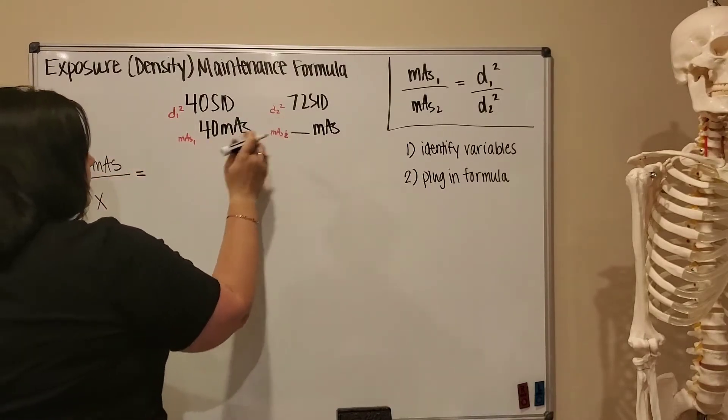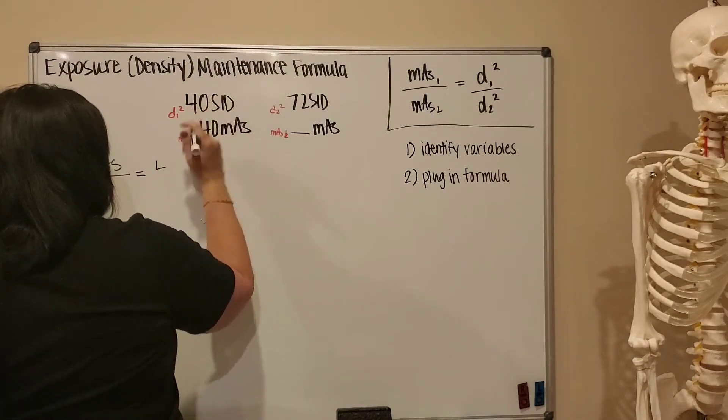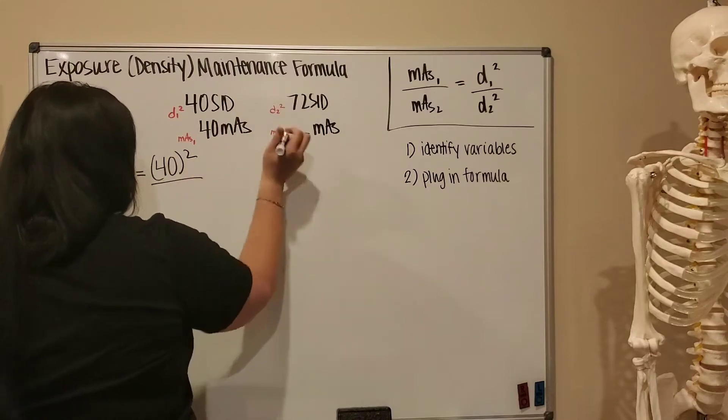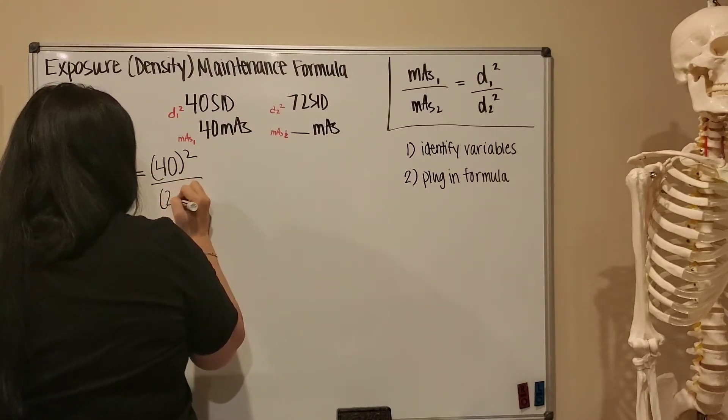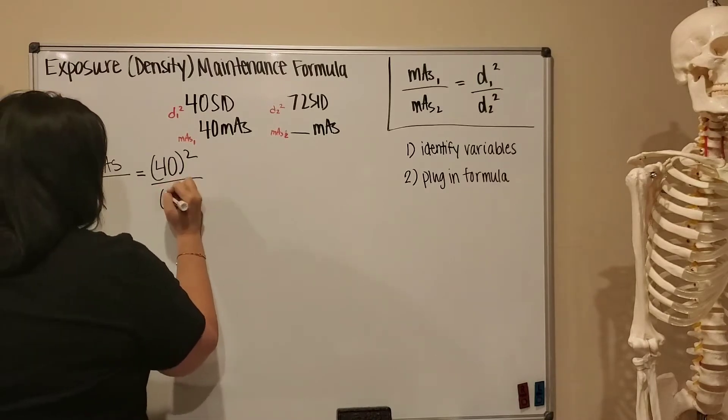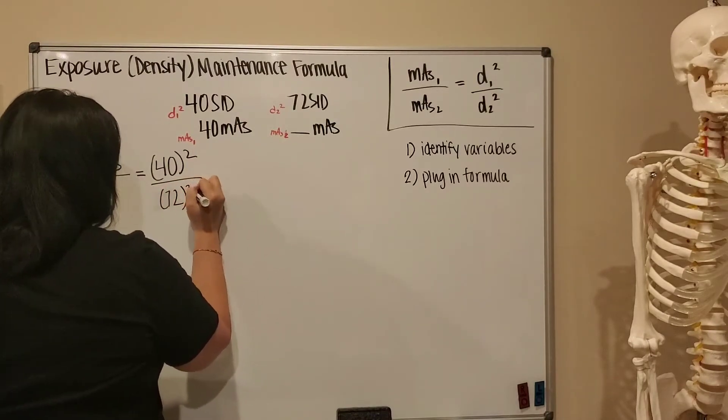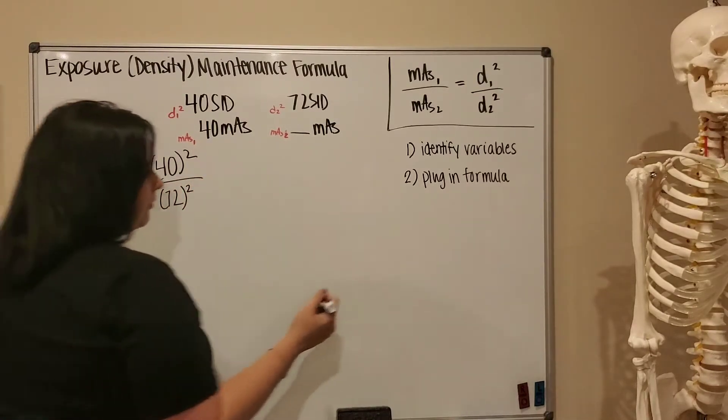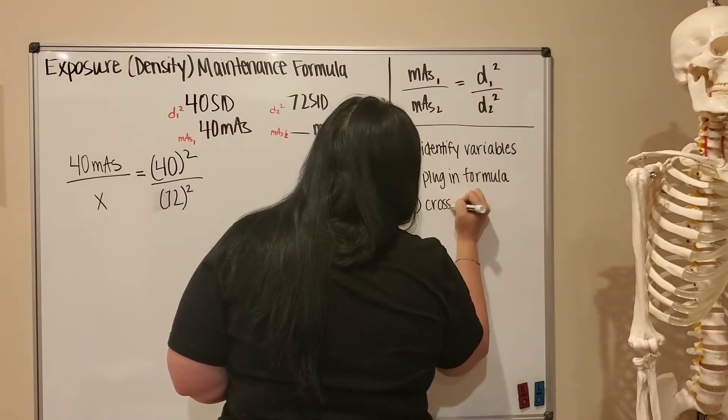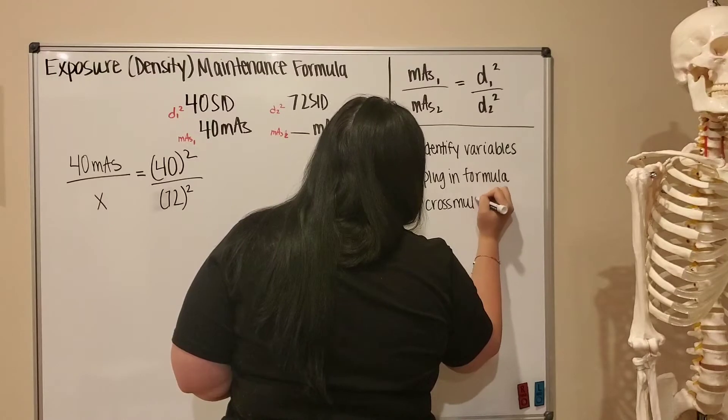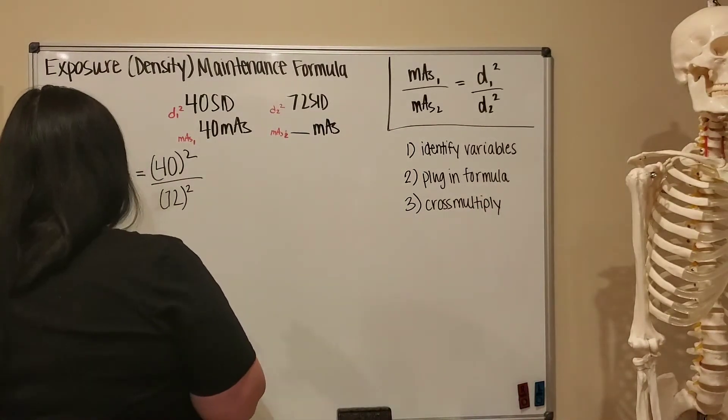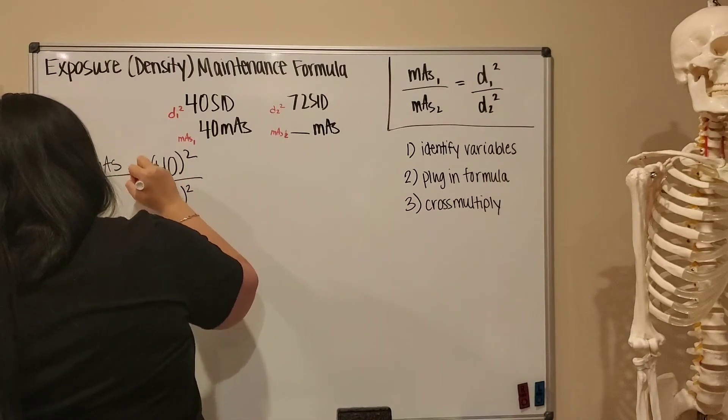Okay, step 3: you're going to cross multiply. And I'm just going to put arrows—I like to put arrows for myself so I can easily see what's supposed to be tied together.